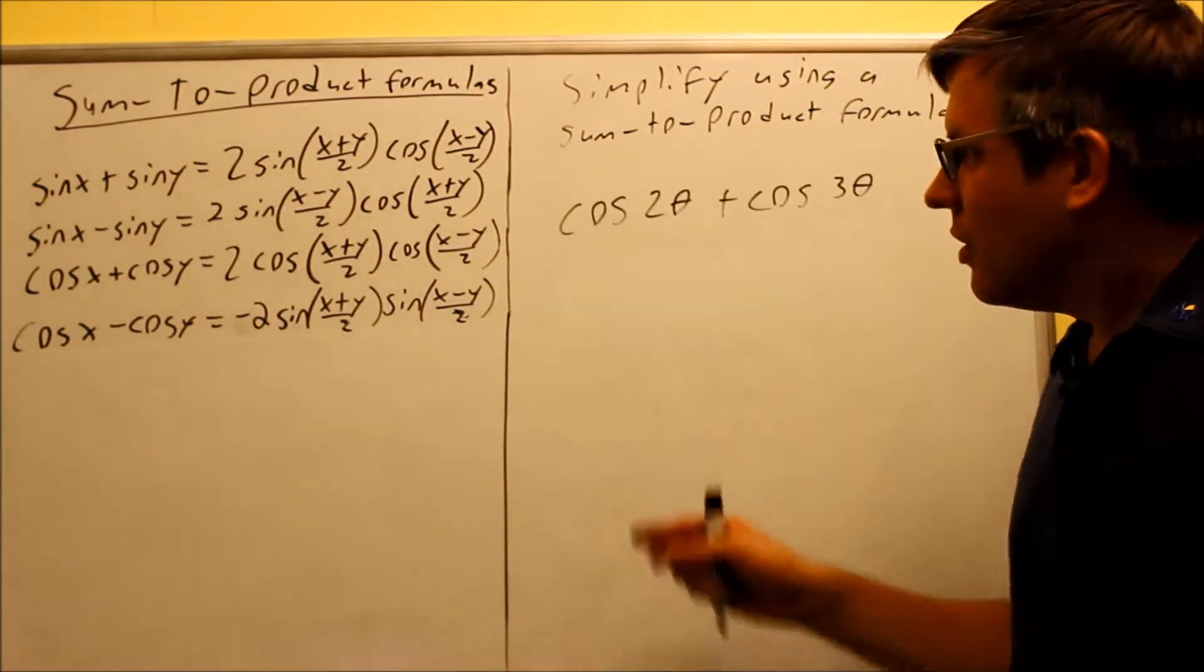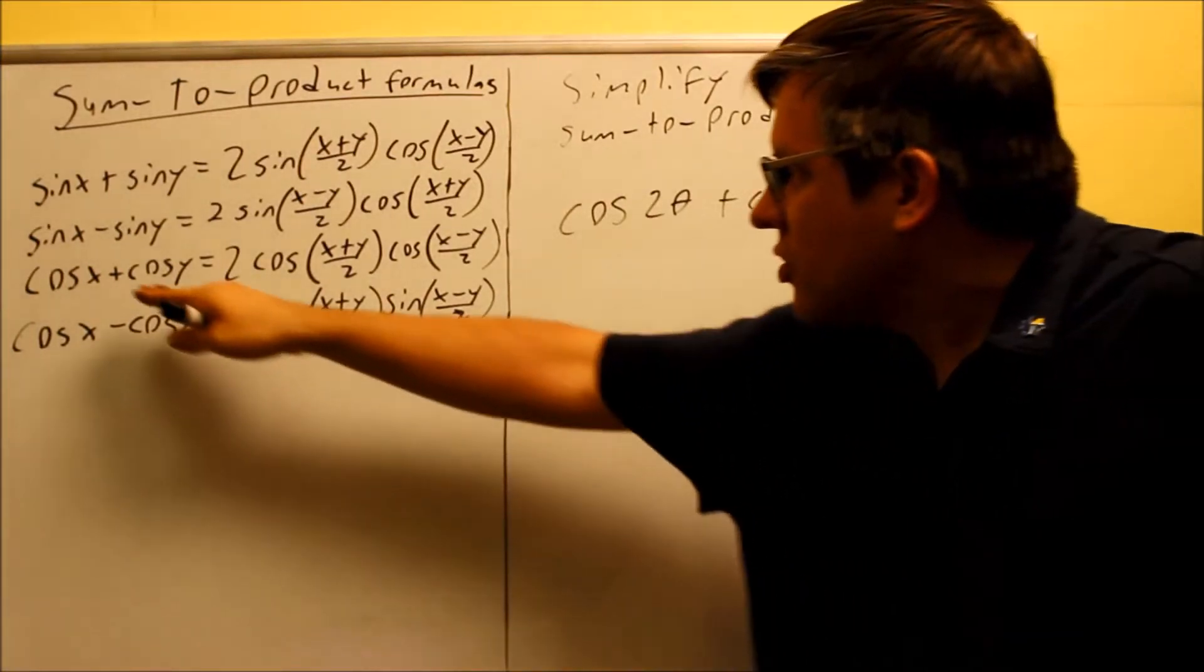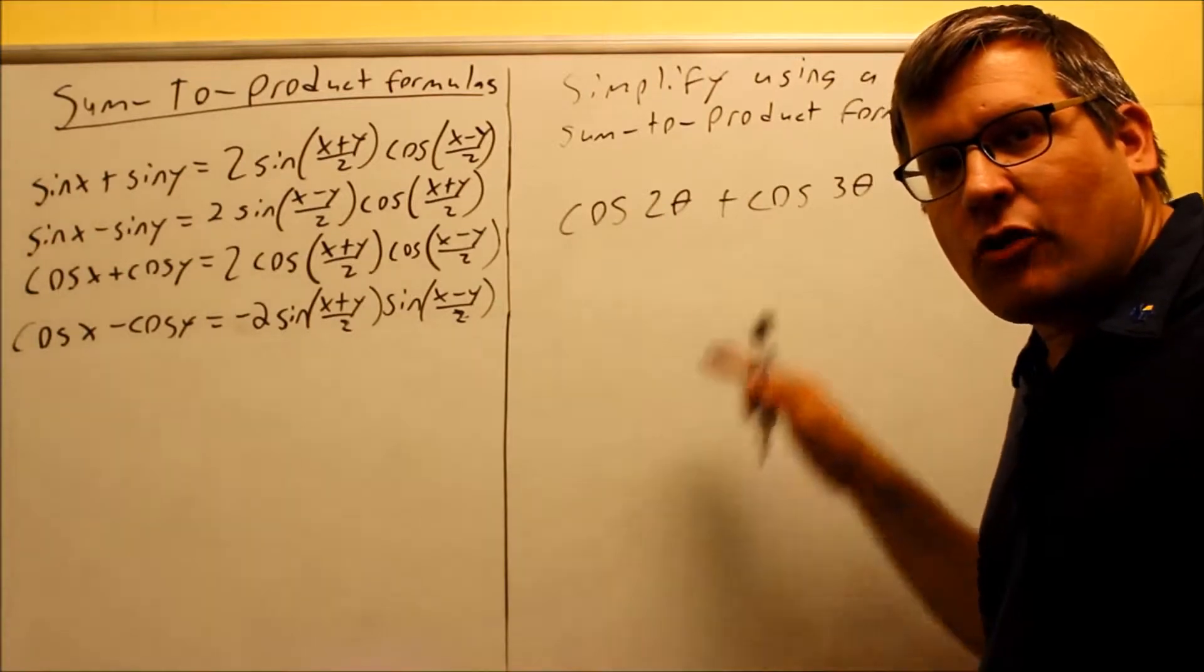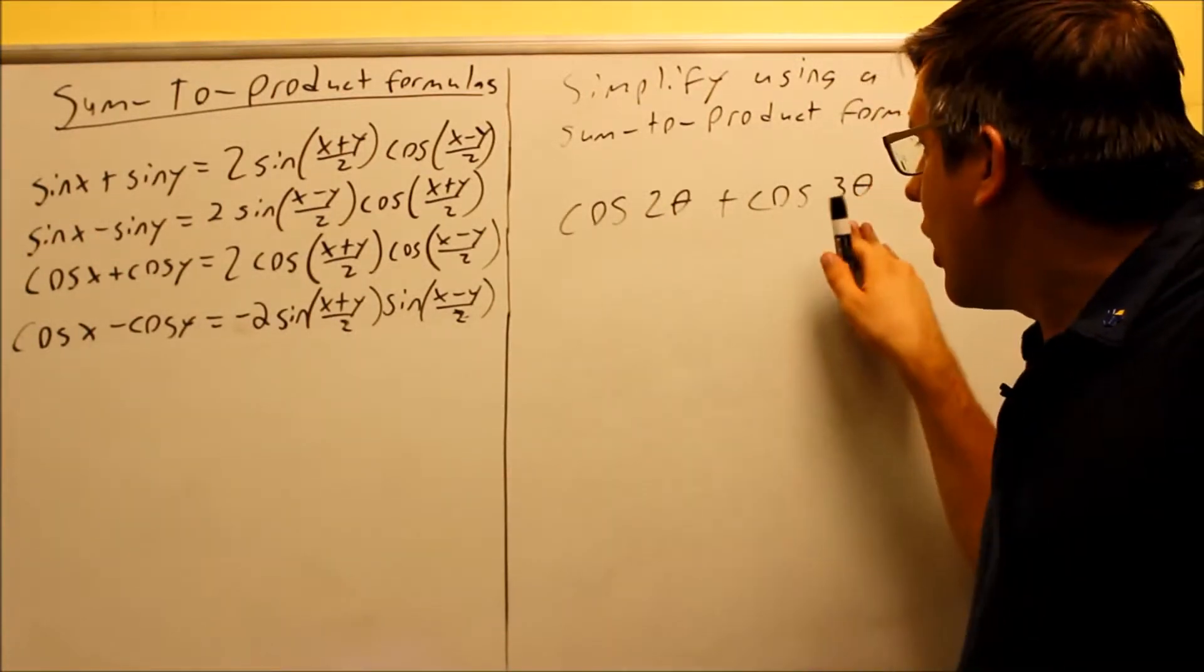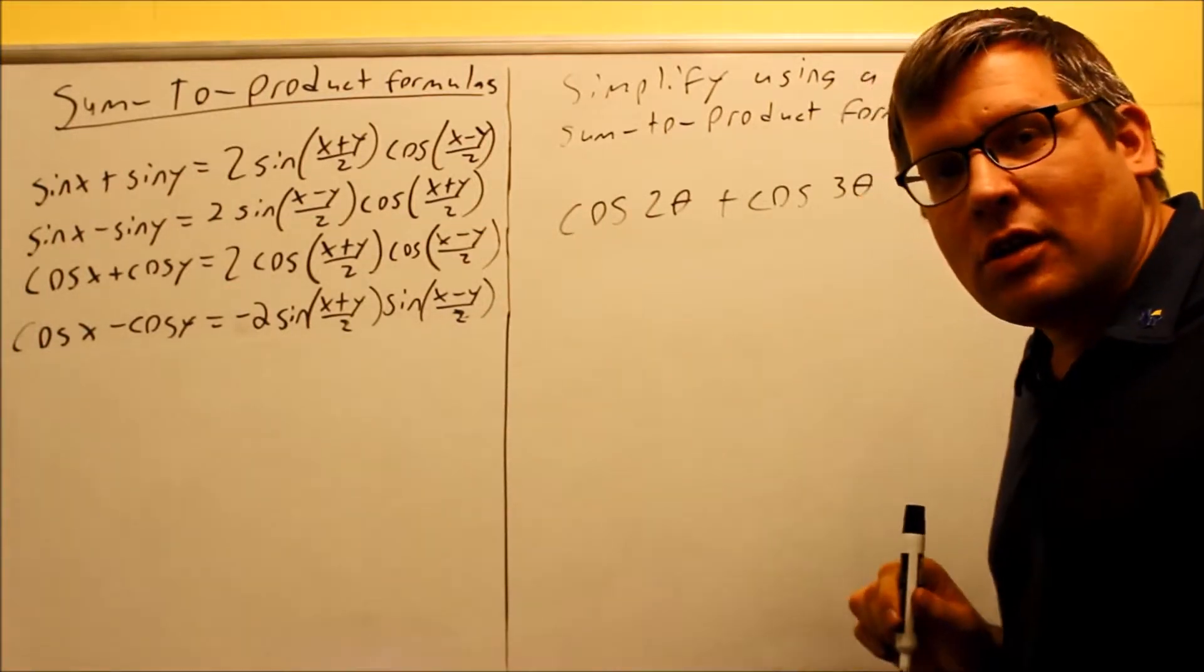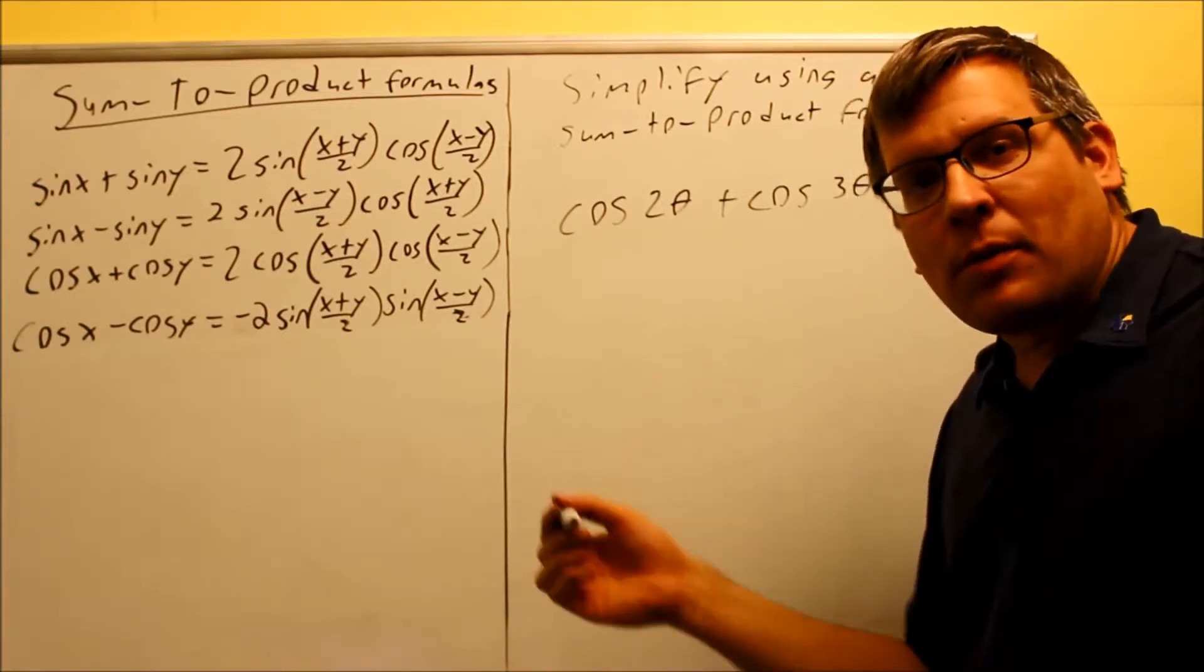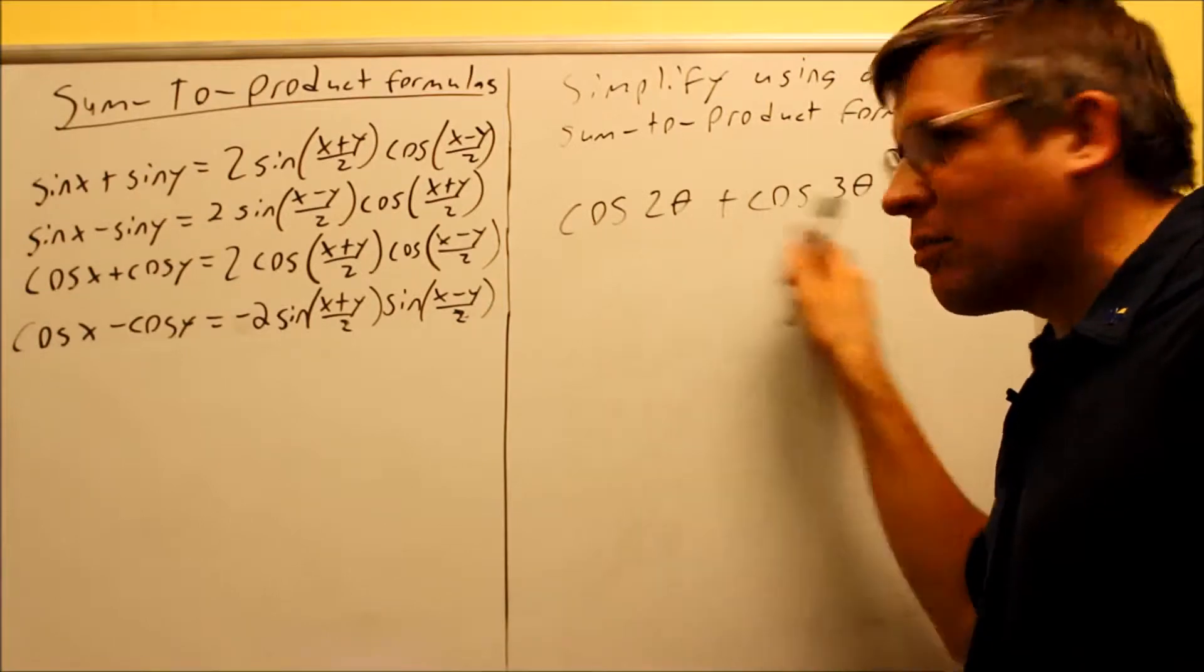Here's the next example, cosine 2 theta plus cosine 3 theta. That would be using the third formula because we have cosine plus cosine. Now if I leave it in the form that it is right now and let x equal 2 theta and y equal 3 theta, that means when I get to that part of the formula I'm subtracting, I'm going to end up with negative angle, which is okay because I could use an even-odd property to take care of that. However, a better way of doing it is to simply switch the order.